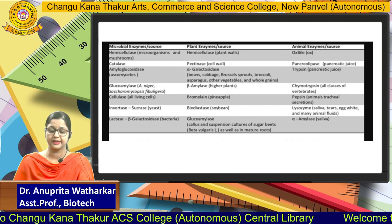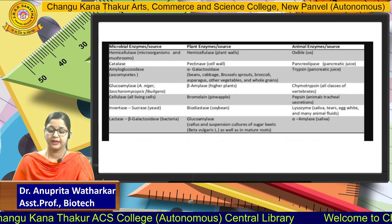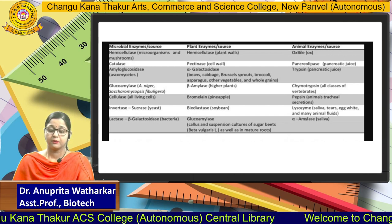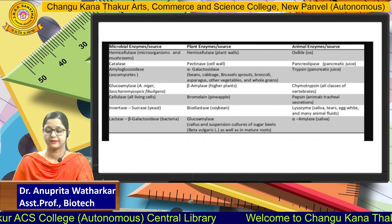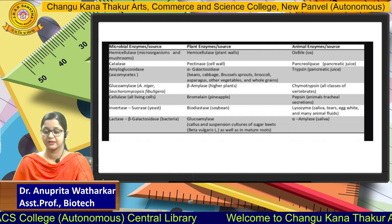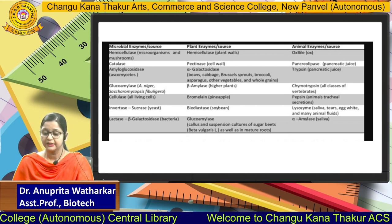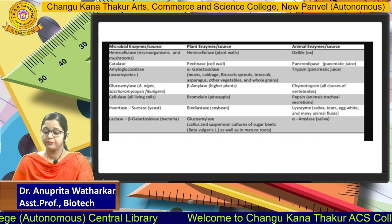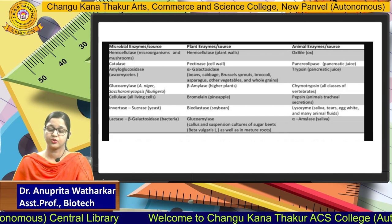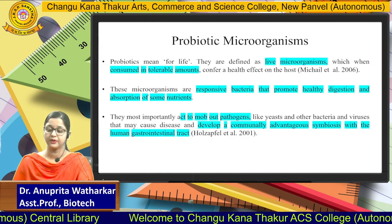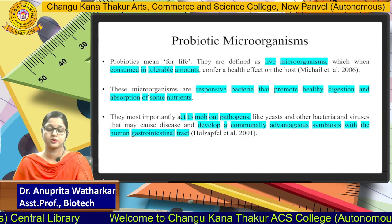Pectinase and hemicellulase can be obtained from plant sources, while pepsin, trypsin, and lysozymes can be obtained from animal sources.